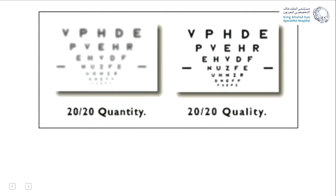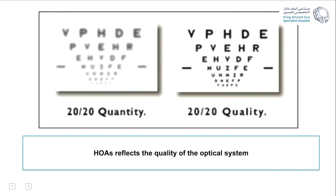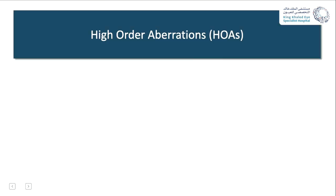High order aberrations may not be associated with refractive errors and are commonly related to irregularities of the corneal surface and opacities. They impact the quality rather than the quantity of vision. Typical symptoms include glare, halos, starburst, ghosting, and double vision. Patients may have 20/20 visual acuity but poor quality of vision due to high order aberrations — so high order aberrations are a reflection of the quality of vision.